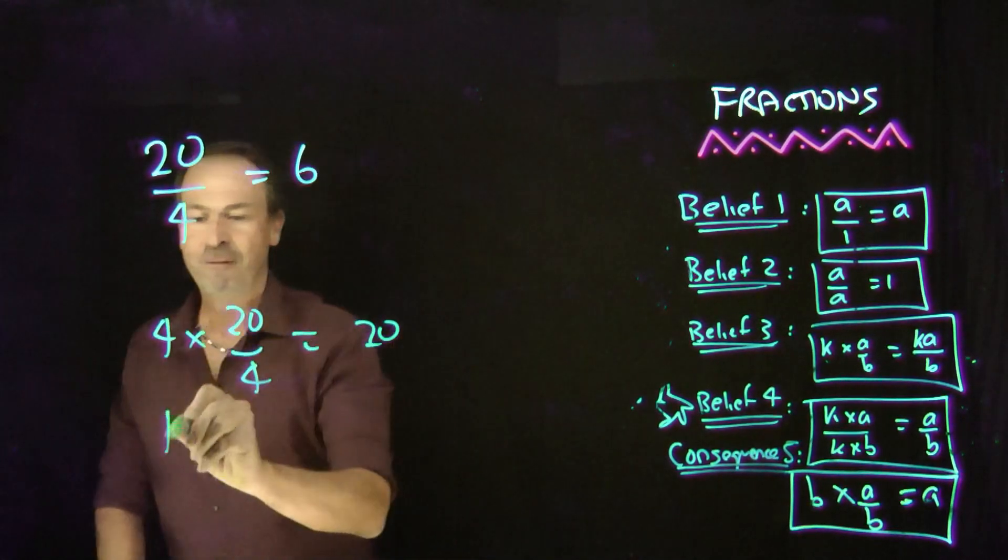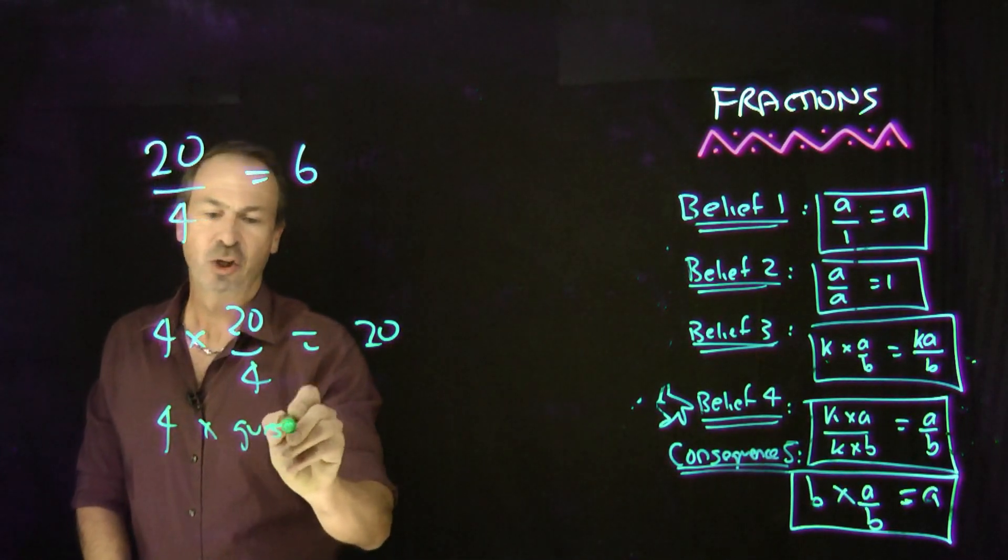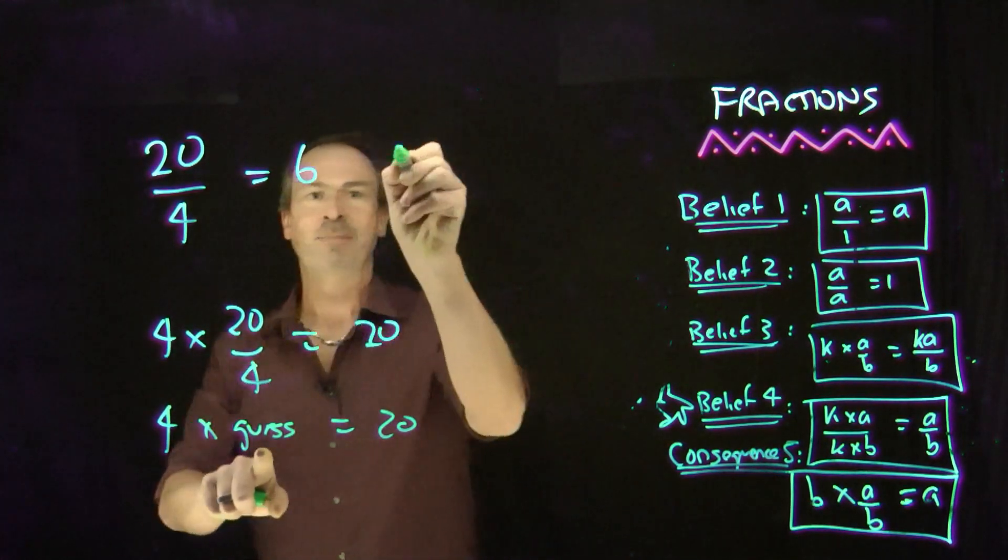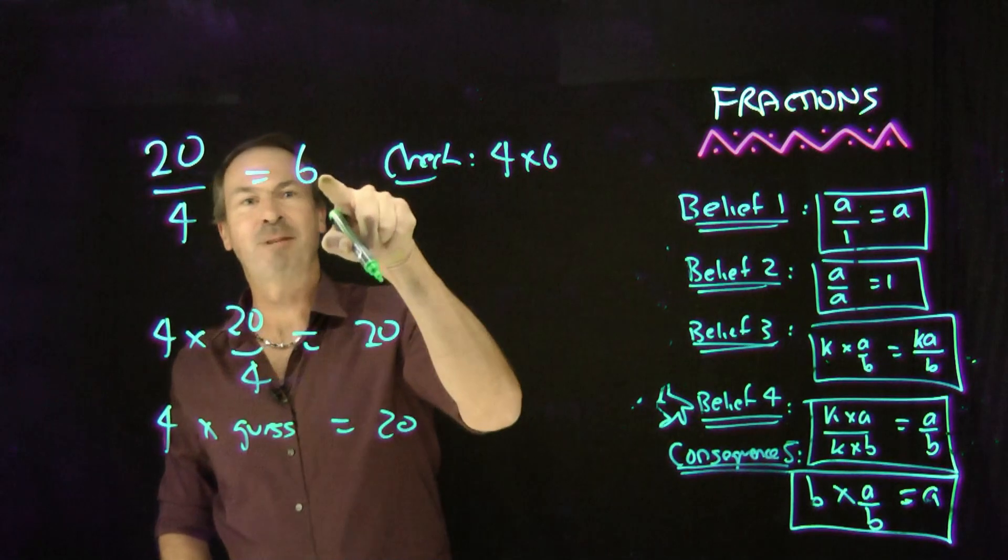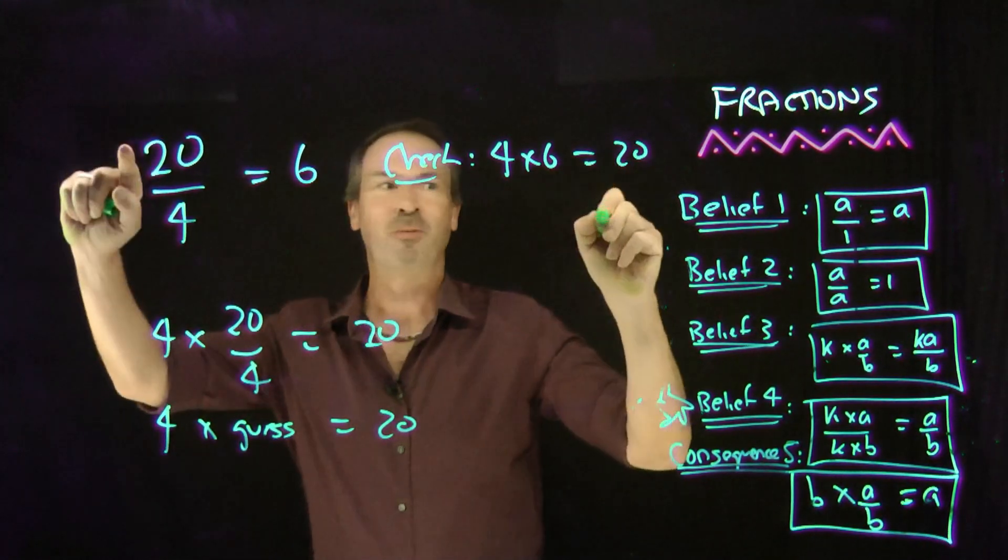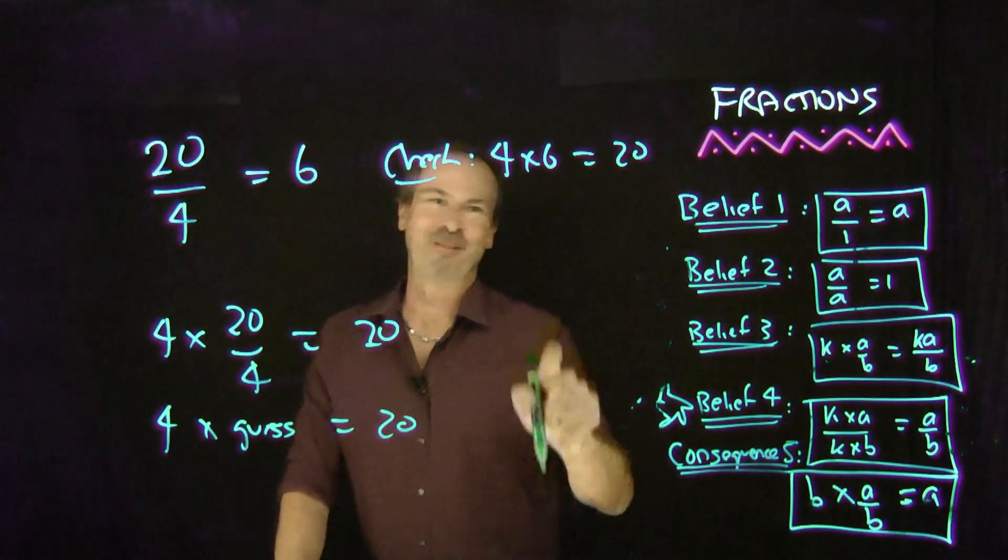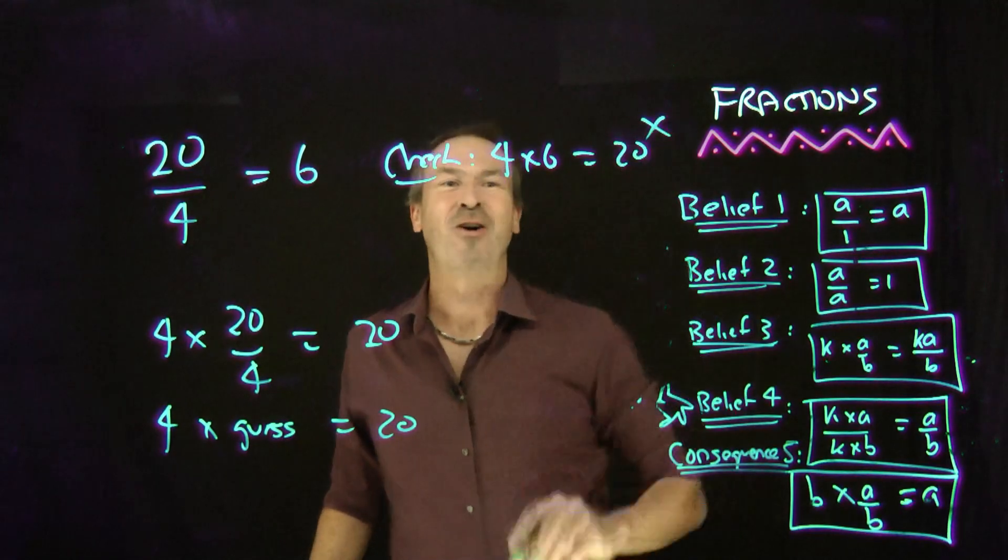So this is saying 4 times my guess should give me 20, and I guessed 6. So here's my check. 4 times 6, does that give me 20, the numerator? Uh-uh, it doesn't. 4 times 6 is not 20. I failed my check.